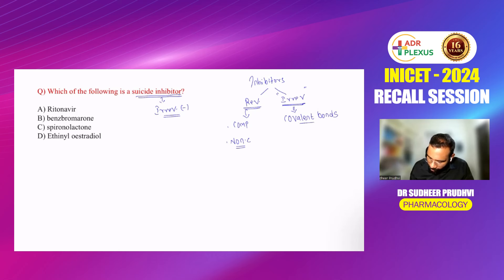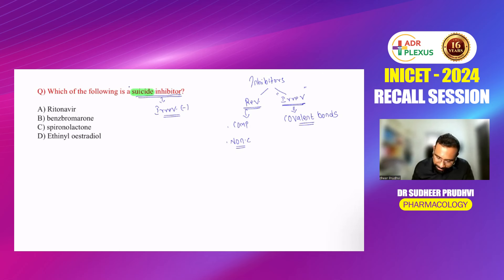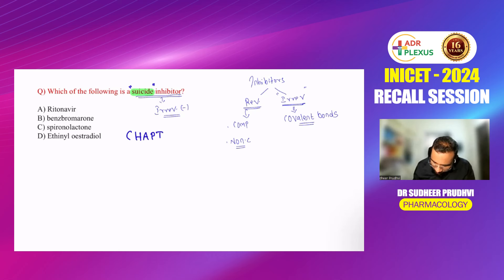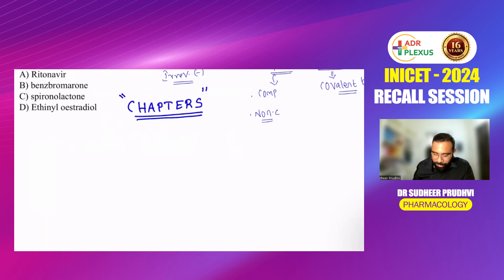Examples of suicide inhibitors can be remembered with the mnemonic CHAPTERS — because having too many chapters for an internal exam makes you want to commit suicide rather than write the exam! C: clopidogrel; H: heparin; A: aspirin; P: proton pump inhibitors, propylthiouracil; T: ticlopidine; E: ethinyl estradiol; R: ritonavir; S: spironolactone, selegiline, phenobarbital. Also, organophosphate compounds bind irreversibly with acetylcholinesterase enzyme.